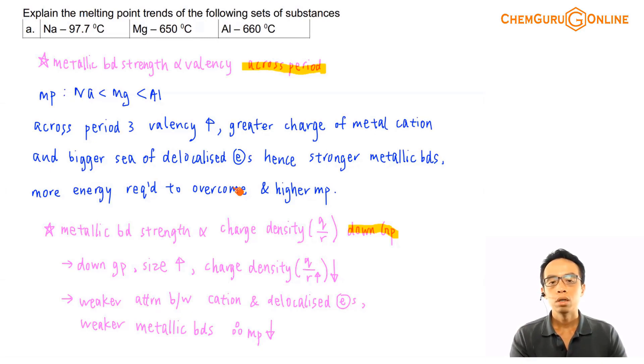So does it mean that if down the group, their valency is exactly the same, so does it mean that they have the exact same boiling point? Apparently not. So we want to understand that. If it is down the group, then how do I compare metallic bond strength?